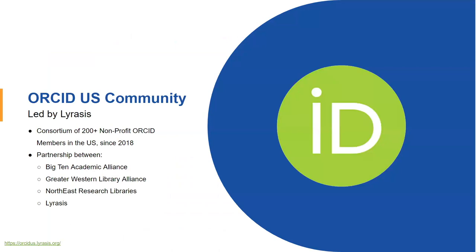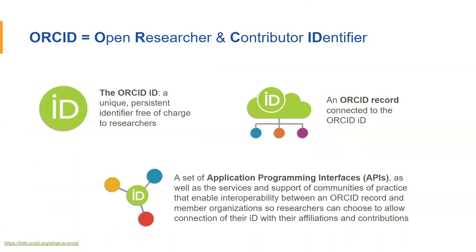Looking at our ORCID US Community Program, this is a consortium of over 200 non-profit organizations that are ORCID members in the US. LYRASIS has been leading this since 2018 in a partnership with the Big Ten, GUILA, and NEURL. Any non-profit in the US can join this program and become an ORCID member. A quick refresher on ORCID: you've got your ORCID ID, which is the unique persistent identifier that's free for researchers to use and will help distinguish them throughout their career. Every ORCID ID links to an ORCID record where information is stored — similar to a CV or resume — things like affiliations and research activity.